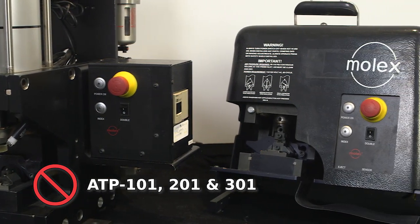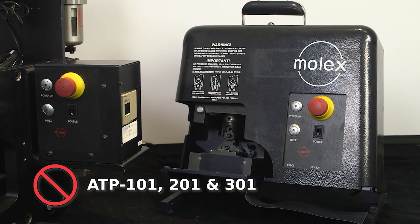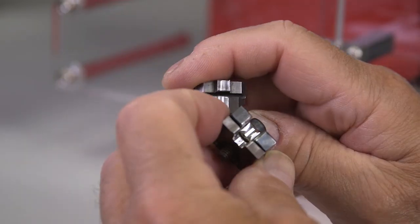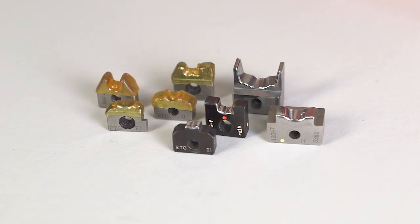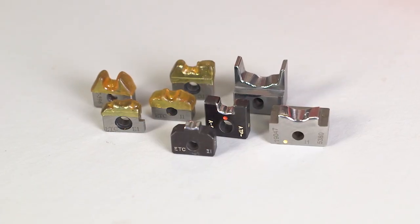and 301 crimp presses while preserving their compatible ATP die sets. Whether you have an ATP die set from 20 years ago or purchase a new ATP die set today, it will function in the tape terminal crimp module.